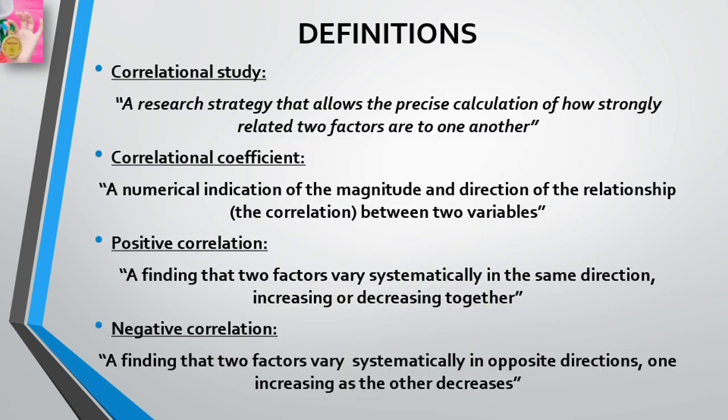Before moving to our lecture, I have included some points and definitions at the start so it will be easy for you to understand the terms during the lecture. A correlational study is a research strategy that allows the precise calculation of how strongly related two factors are to one another. A correlation coefficient is a numerical indication of the magnitude and direction of the relationship between two variables.